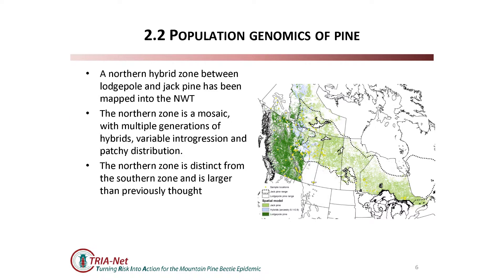Just yesterday, a master's student in my lab named Ian Burns defended his master's degree. I asked him: if I was going to give one slot on your work tomorrow, what should it say? Fortunately I guessed right, and this is more or less the punch line from Ian's thesis. Ian typed pine from all across this extended sampling range. He used a low-density set of markers but they're highly specialized - every single marker is supposed to discriminate lodgepole from jack pine, and together they form a fairly high-resolution toolkit for discriminating between the two species and identifying hybrids.